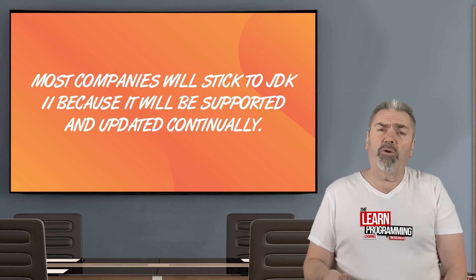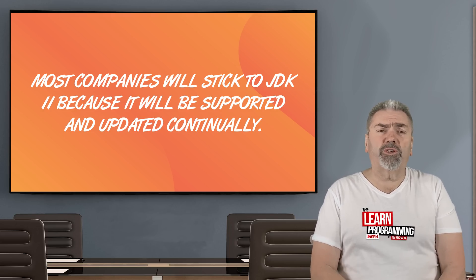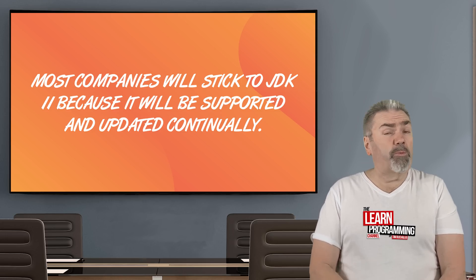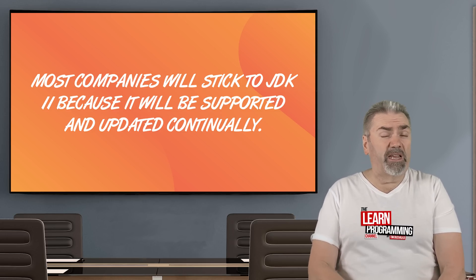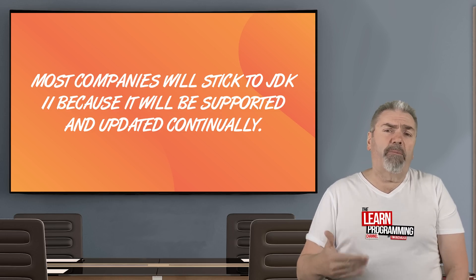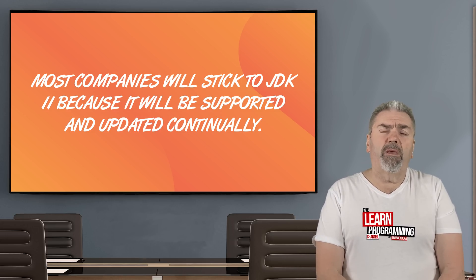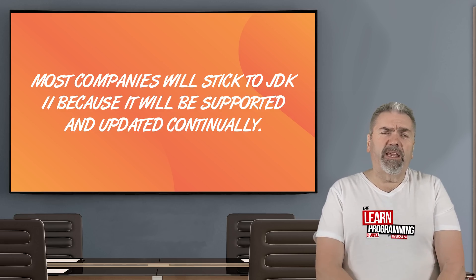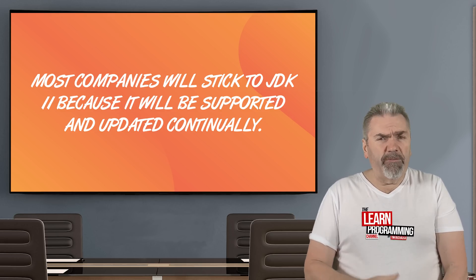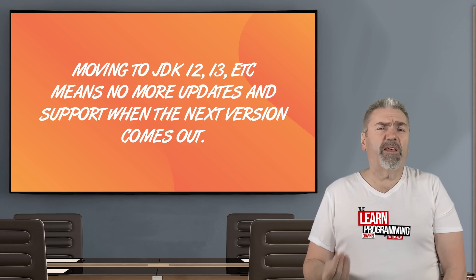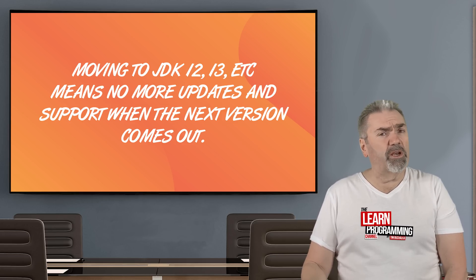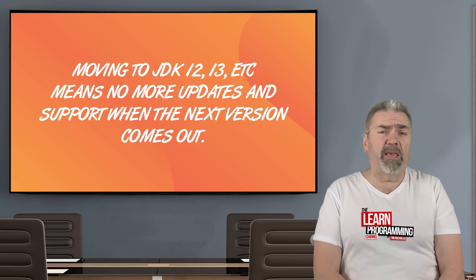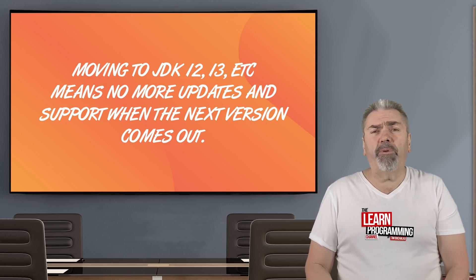What companies will do is stick to the long-term support version, which is currently version 11, then perhaps in September 2021, when version 17 of the JDK comes out, they'll update to that. The reason for sticking to JDK 11 is that if you move to JDK 12 because of the lack of support — no more updates, particularly security updates — that's going to be a risk for companies.